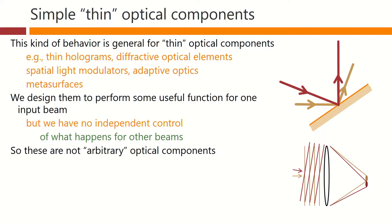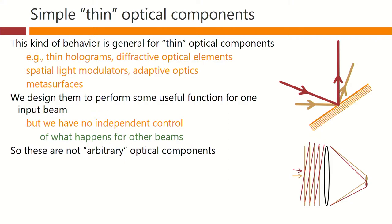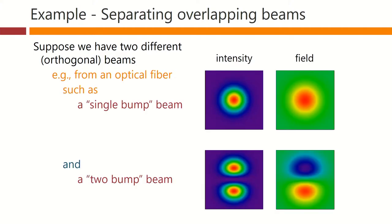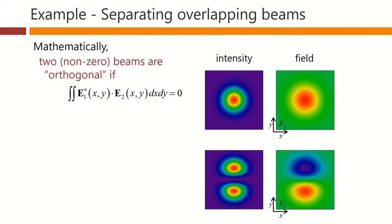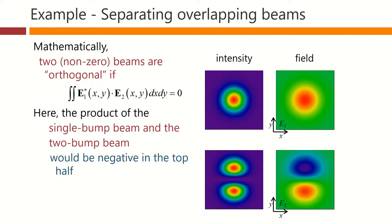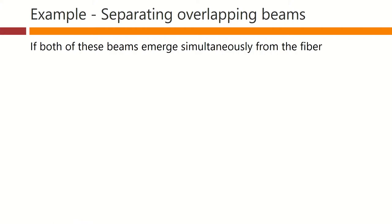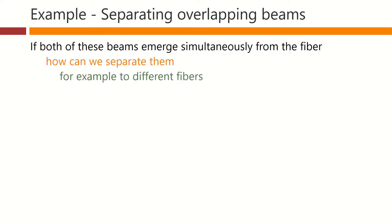So these are not arbitrary optical components. Arbitrary optical components would allow us separately to choose what happens for each different input. Suppose we have two different beams, for example from an optical fibre. Perhaps one has a single bump in it, and perhaps another has two bumps in it. Mathematically, two non-zero beams are orthogonal if this kind of integral between the two fields or beams comes to zero. The product of the single bump beam and the two bump beam would be negative in the top half and positive in the bottom half, and hence the resulting integral would indeed be zero. If both of these beams emerge simultaneously from the fibre, how can we separate them — for example, into two different fibres? And it's particularly important to understand how we would do this without fundamental loss.